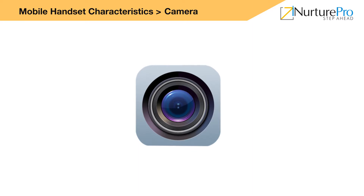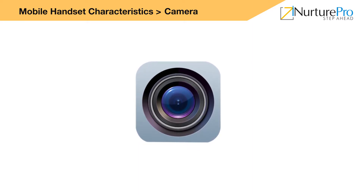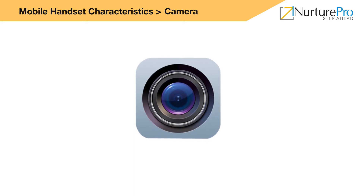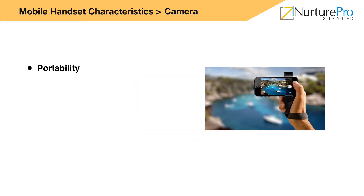Smartphones today have built-in cameras as well. These cameras help in capturing images and videos of high quality. Let's look at a few features of a camera phone. Portability: Camera mobile phones are light, so rather than carrying a heavy and bulky digital single-lens reflex (DSLR) camera to capture daily moments, one can carry a camera mobile phone which is handy and fits all pockets. Most cameras weigh almost four to six ounces. Point-and-shoot capability: Camera mobile phones come with basic default settings, so users need not change the settings manually to capture a good picture — the user just needs to select the focus and press the button.